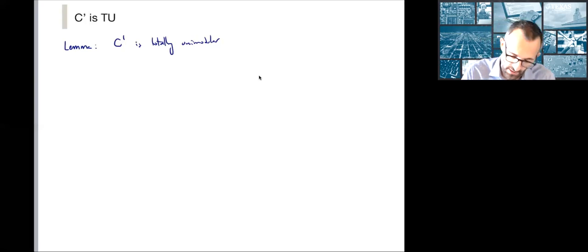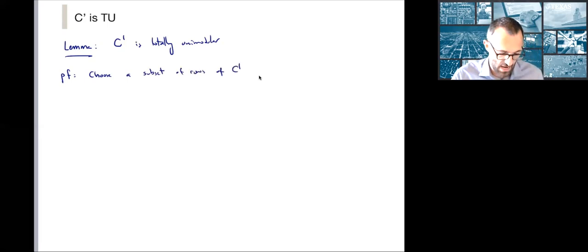We need to start with some subset of the rows. Let's choose a subset of rows of C dash. The rows of C dash correspond to the elements of script F, so I'm going to use script G to denote this subset of the rows. Now I'm going to make an important definition and this is where laminarity comes in. For each element of G, so U is a subset, define the height of U.